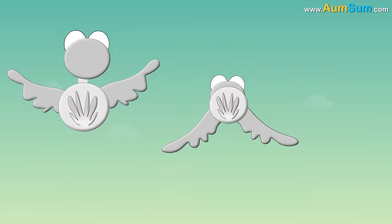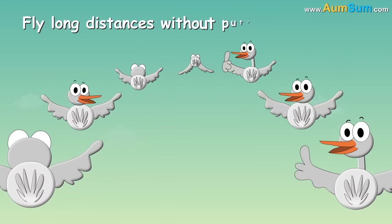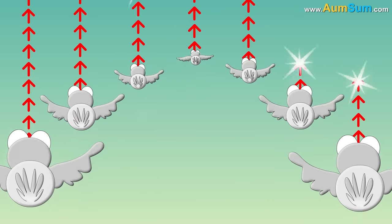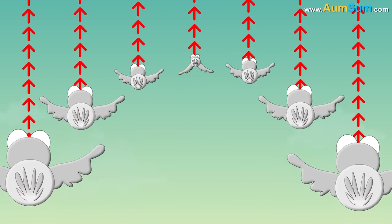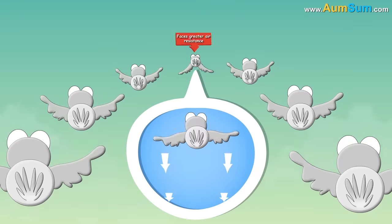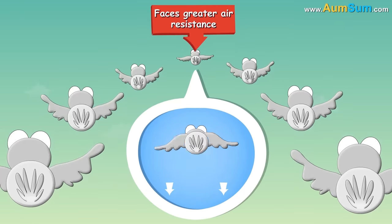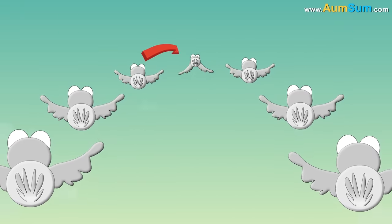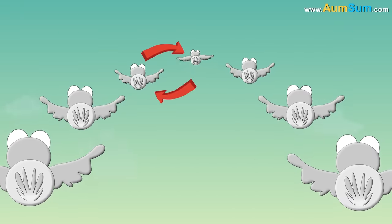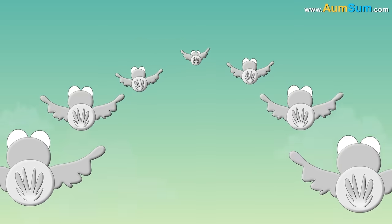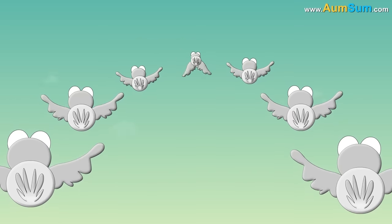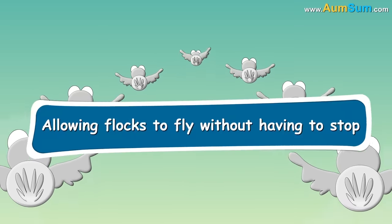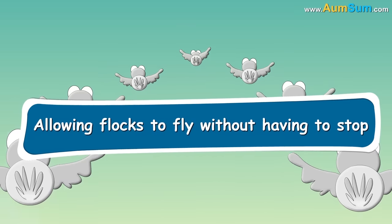Thus, birds are able to fly long distances without putting much effort and maintaining a clear line of sight. Since the bird in the lead faces greater air resistance, the birds keep changing their positions in the V and take turns as leaders. This maximizes the use of each bird's energy, allowing flocks to fly without having to stop.